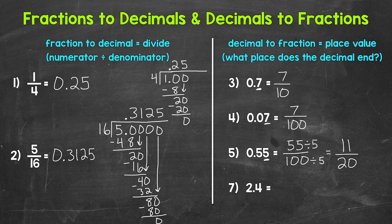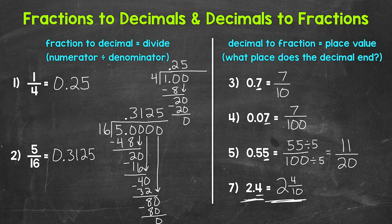Lastly, we have 2.4 — two and four tenths. Don't let the whole number hold us up. All we need to do is write the whole number and then worry about the decimal. Here we have 0.4 — four tenths — so the decimal ends in the tenths place and our denominator is 10: four tenths. So this is two and four tenths. We can simplify the fractional part using a greatest common factor of two: four divided by two gives us two, and ten divided by two gives us five. This simplifies to two and two fifths.